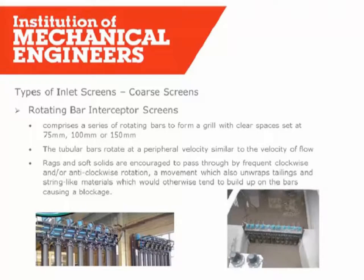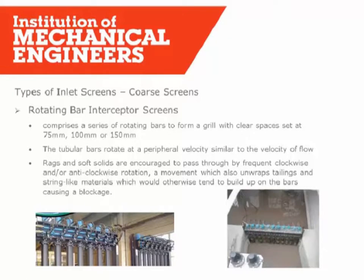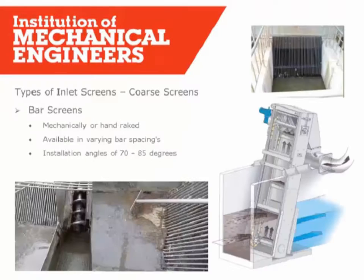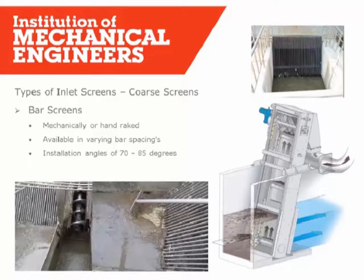Moving on to types of inlet screens, starting with coarse screens. We have rotating bar interceptors, commonly known as RBIs - a series of rotating bars forming a grille across an opening in an inlet channel. The bars rotate at a peripheral velocity similar to the flow velocity and gently pass through screenings that would be acceptable to a fine screen, while preventing large objects such as timber from passing forward. One key thing to remember with RBIs is that you need a mechanism to remove the accumulated material from the channel. Similarly, with coarse screens we have bar screens - bar spacing can vary: 10, 12, 20, 25, or 50mm. These can be manual or automatic and are provided to prevent large gross solids from damaging fine screens.